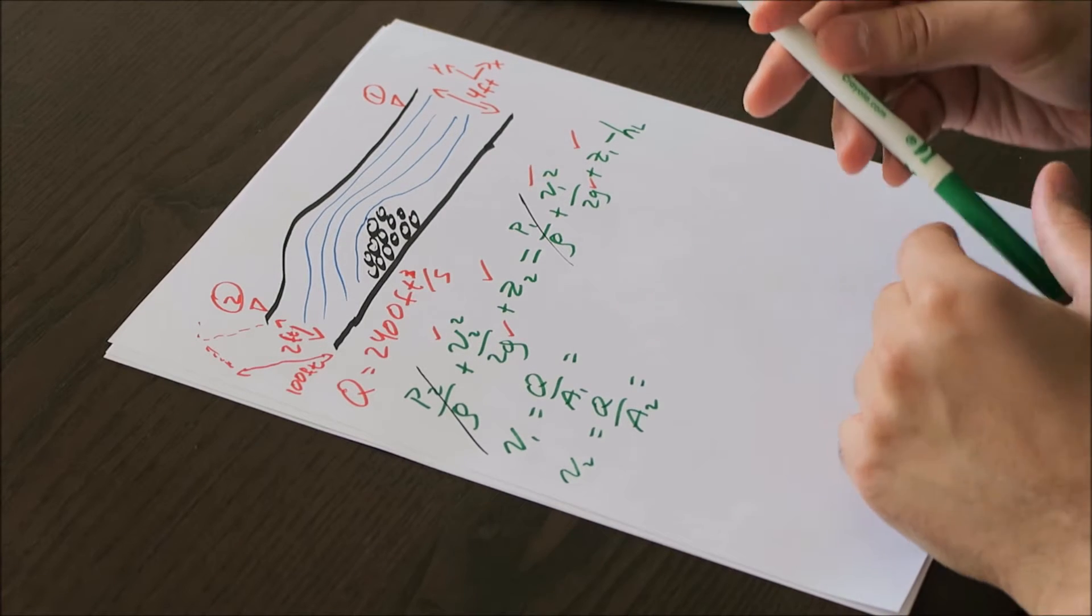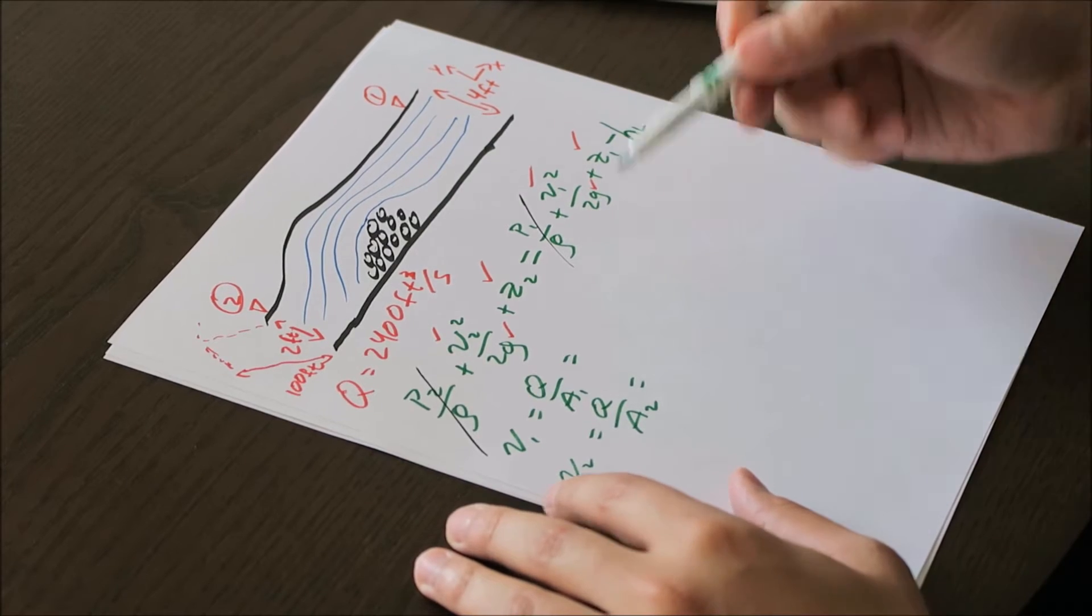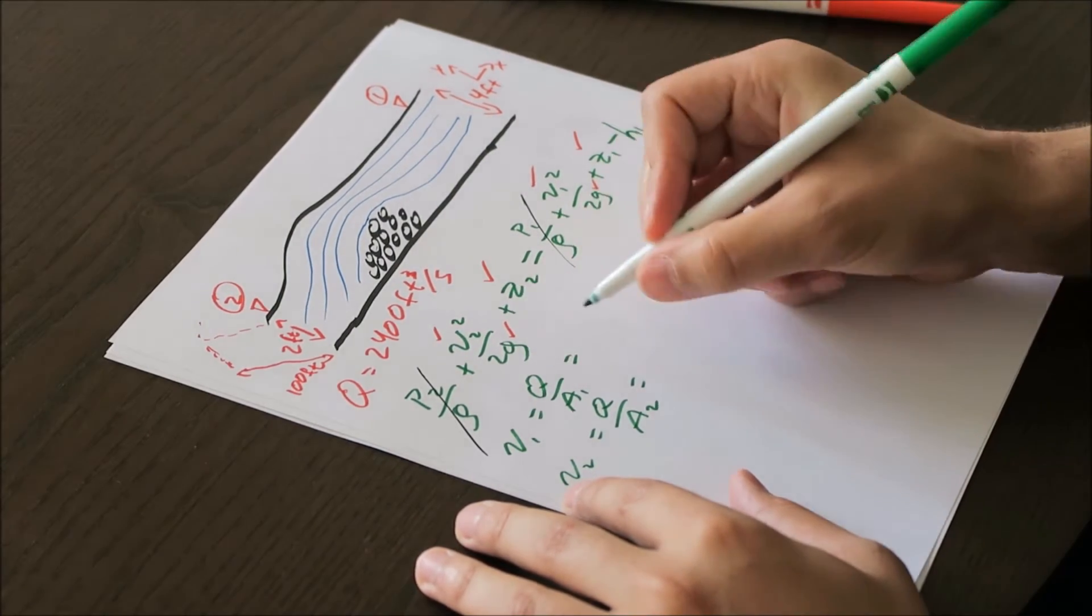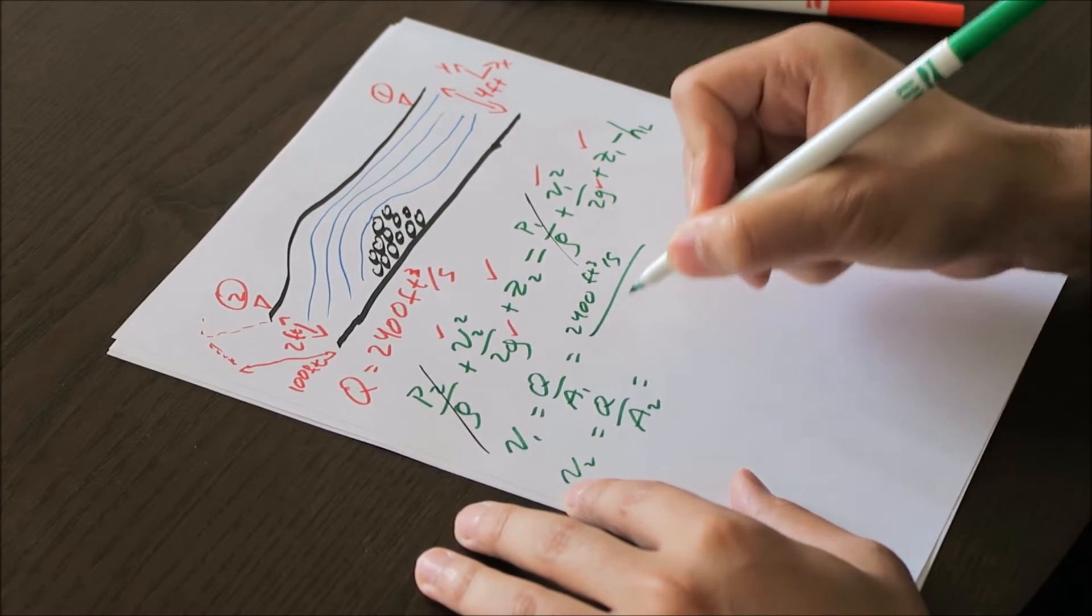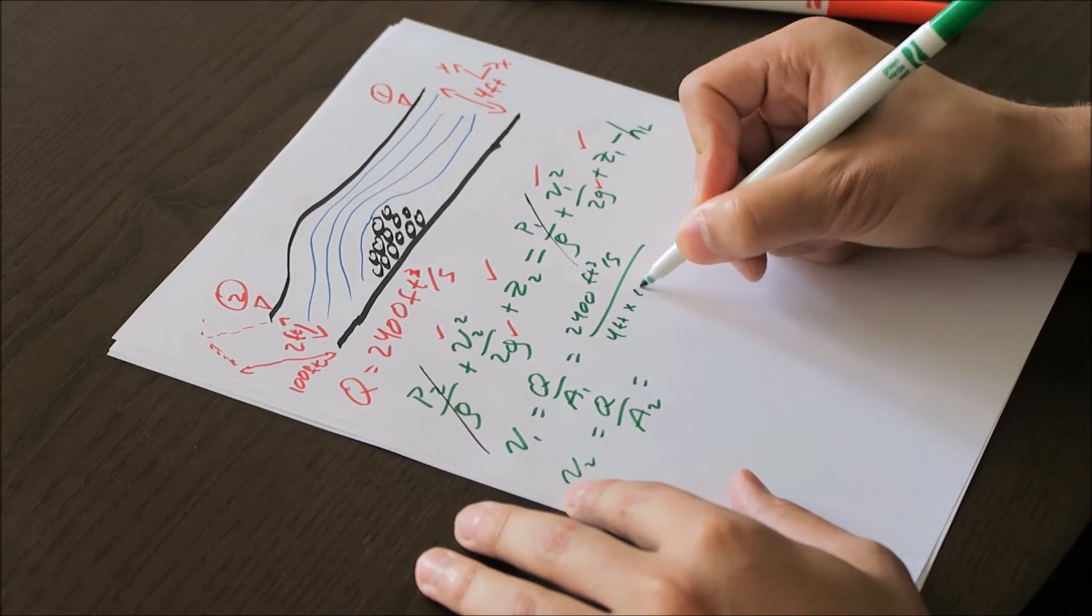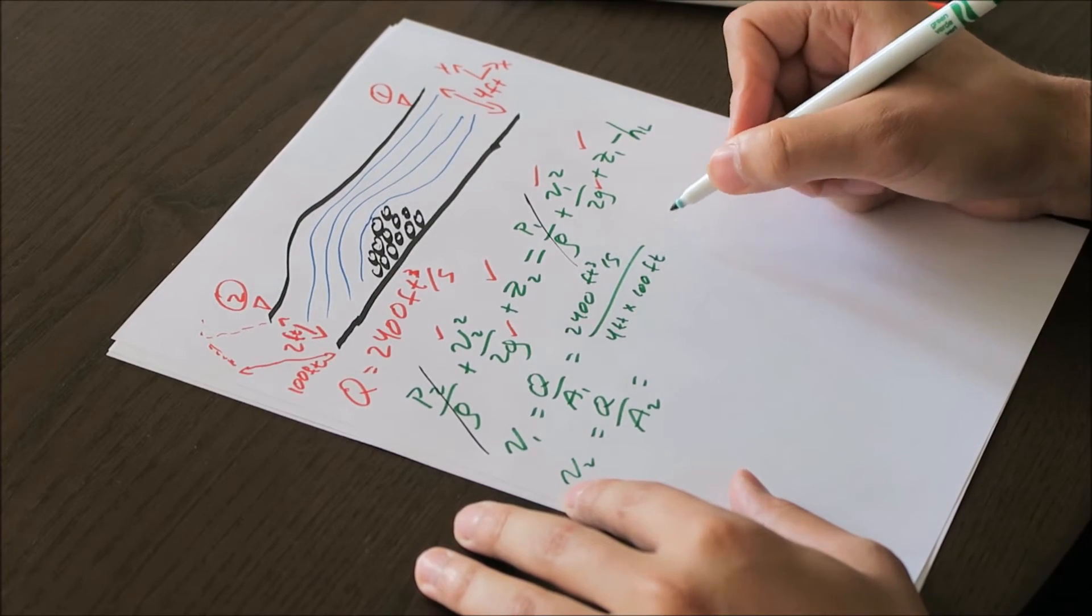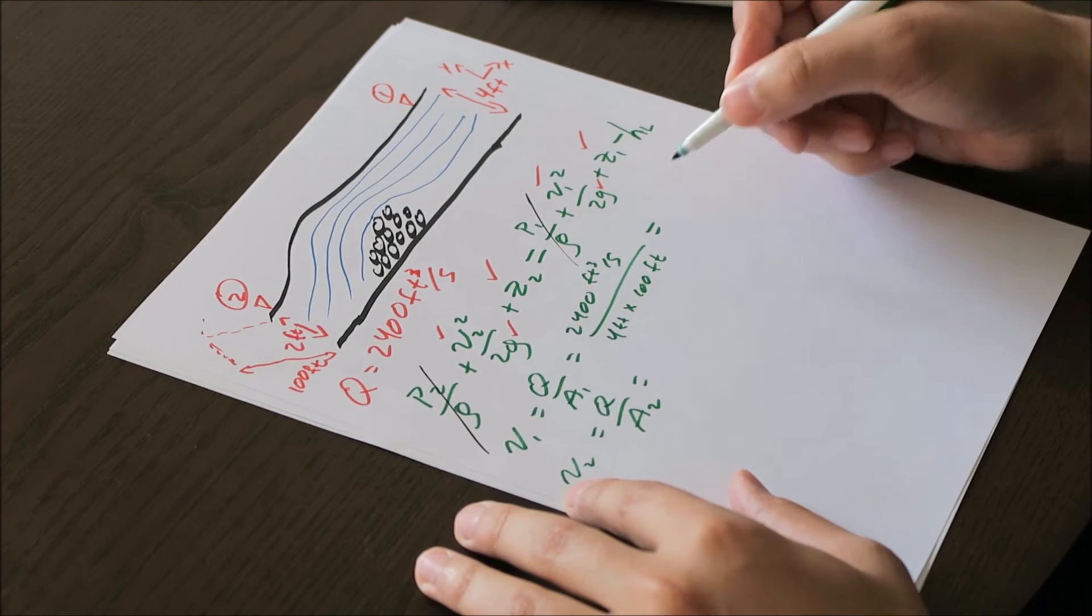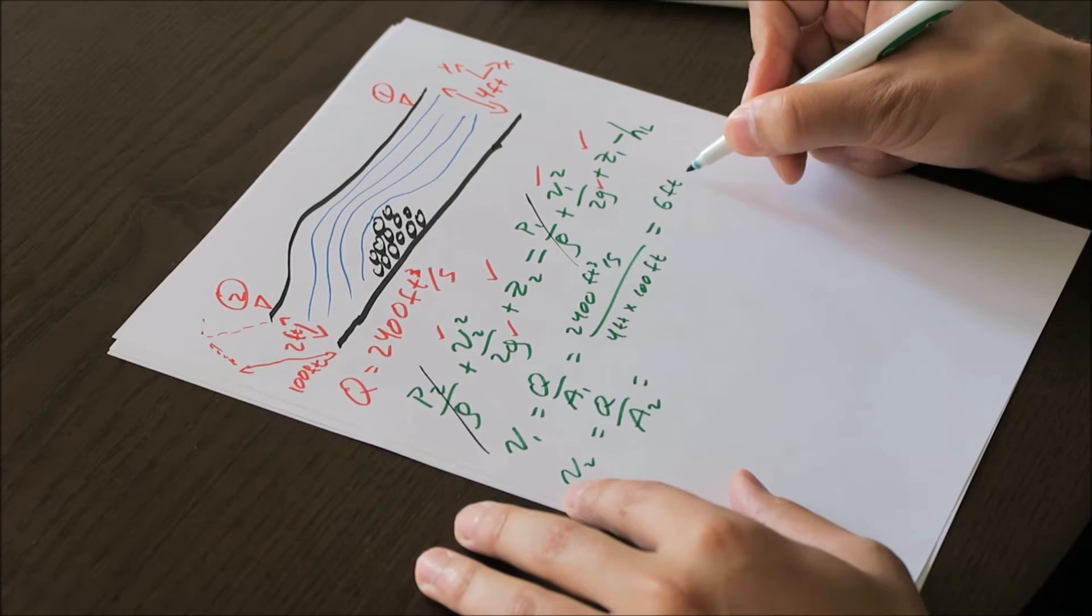And we can start plugging these values in with the algebra. And I'll keep this green for now, because all of our equations are in green. So Q is 2,400 foot cubed per second. A1, which is over on this side, is going to be 4 feet times 100 feet, which is our width. And on our second, we'll finish this one first, since we're right there, this is going to end up equaling 6 feet per second.